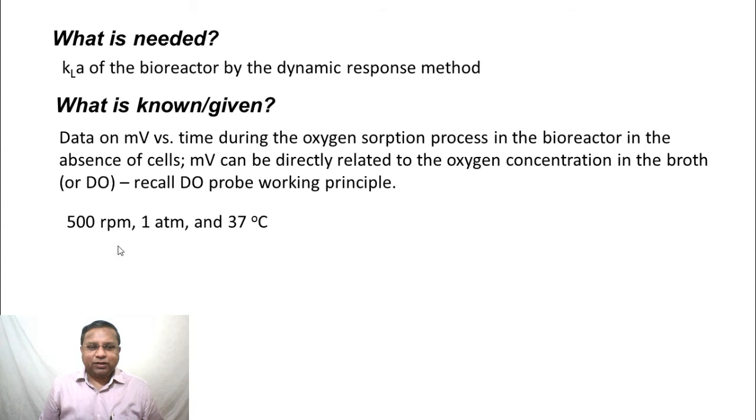We also know that the bioreactor conditions are: the stirrer is rotating at 500 rpm, the pressure is 1 atmosphere, temperature is 37 degrees C. As mentioned in the lecture, all these parameters - the agitation level, rpm, aeration level, liters per minute or volume per volume per minute and so on, temperature, pressure - all these have significant impact on the KLA value.